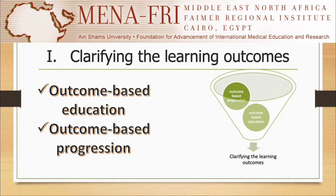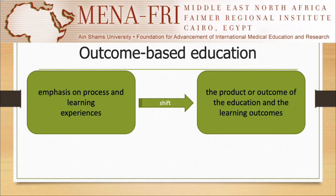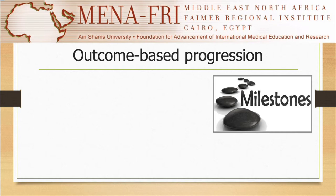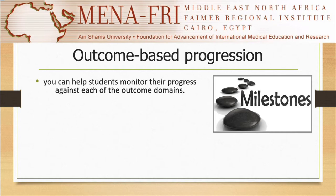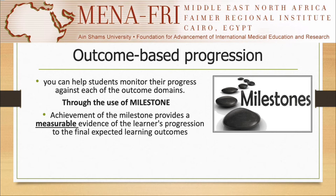The first approach is clarifying the learning outcome, based on two main pillars: outcome-based education and outcome-based progression. There has been a move from an emphasis on process and learning experience — such as lectures, small groups, practical activities, and clinical work — to the product or outcome of education, and the learning outcome expected from the student to master by the end of the curriculum phase, the course, or even before graduation. This move to outcome-based education has been described as the most significant development in medical education over the past two decades. Outcome-based progression is a concept by which you help students model their progress against each outcome domain through the use of milestones. Achievement of a milestone provides measurable evidence of the learner's progression to the final expected learning outcome. A milestone is defined as a definite observed marker of an individual's ability along a developmental continuum.